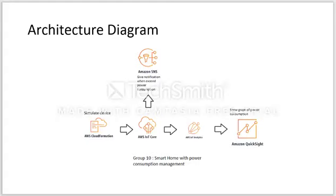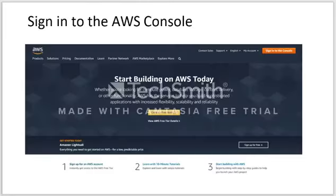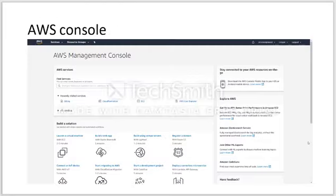Amazon SNS will be used to send notifications when power consumption exceeds the threshold. Next is the Amazon Platform Configuration. First, we sign in to the AWS Console and use it to access every service we will be using in this project.